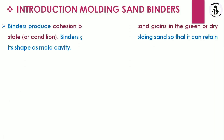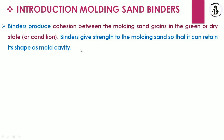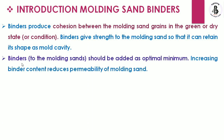Binders produce cohesion between the molding sand grains in the green or dry state — those being the two conditions of the sand. Binders give strength to the molding sand so that it can retain its shape as a mold cavity. They increase dimensional accuracy and prevent damage to the mold cavity, which are necessary conditions for the sand molding process.